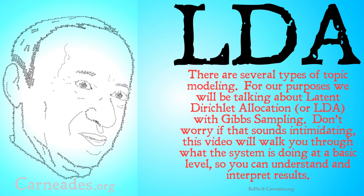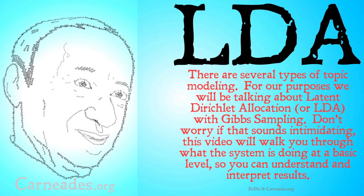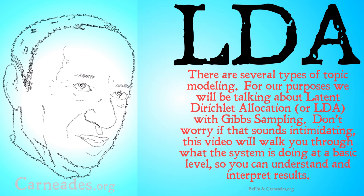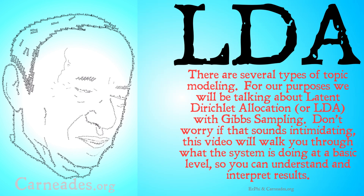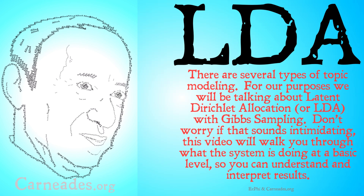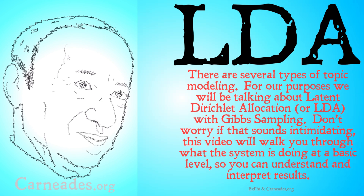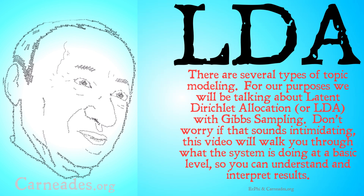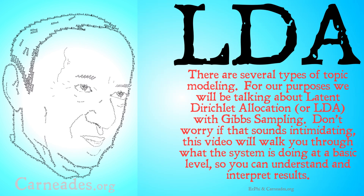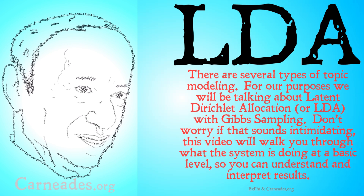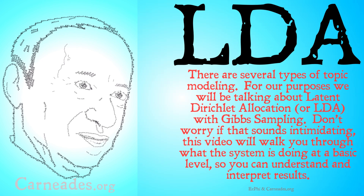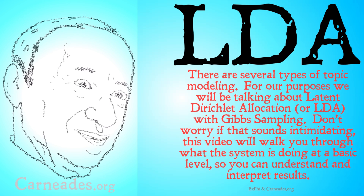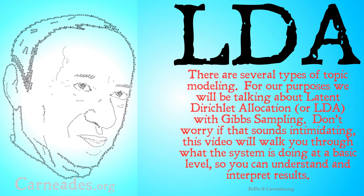There are several types of topic modeling, but for our purposes we're going to be talking about LDA topic modeling, or latent Dirichlet allocation with Gibbs sampling. Don't worry if that sounds intimidating. This video is going to walk you through what the system is doing at a basic level so you can understand and interpret results. I'm not trying to teach you how to make your own LDA system, but fortunately for the philosophers out there that may be less tech savvy, there are systems that exist.